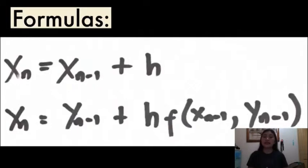Note that xn minus 1 and yn minus 1 are the previous values of the given x and y. So let's have an example.